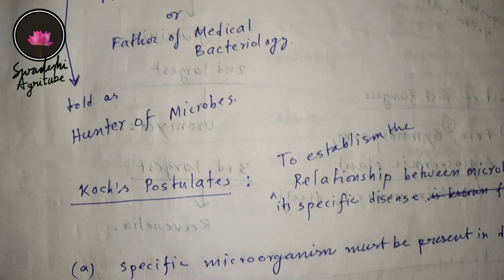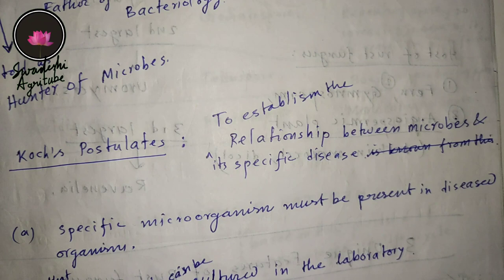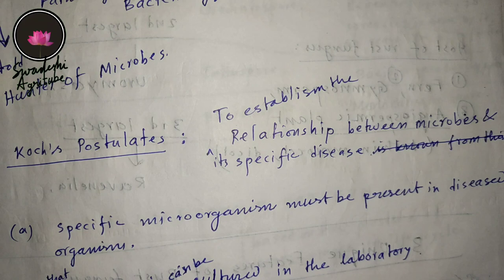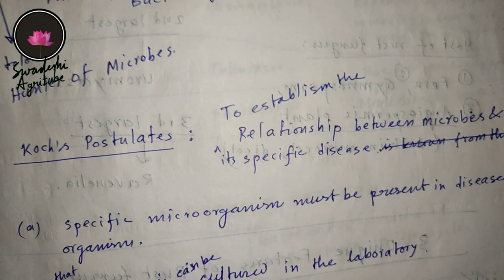First of all, we have to know the purpose of Koch's postulates. The purpose is to establish the relationship between microbes and a specific disease — to establish the relationship between the microbes and its specific disease. That's the purpose of Koch's postulates. He proposed four postulates, and you have to remember all of them very carefully.